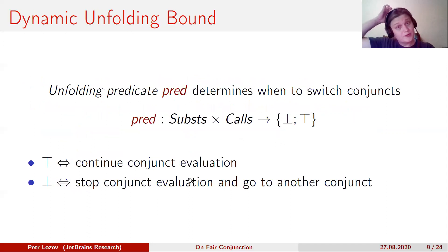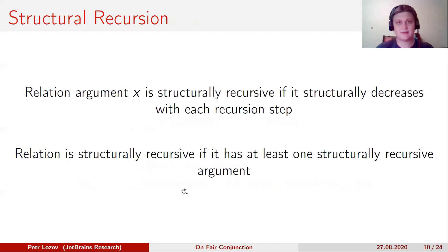So, now we want to dynamically determine when we need to switch conjuncts. To do this, we have a predicate that takes state and a relational call as arguments. As long as the predicate is true, we will continue conjunct evaluation. Otherwise, we will stop conjunct evaluation and go to another.